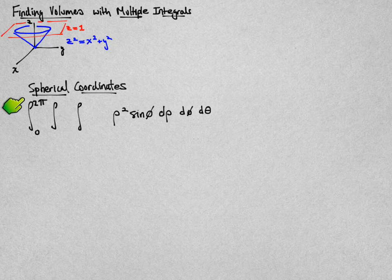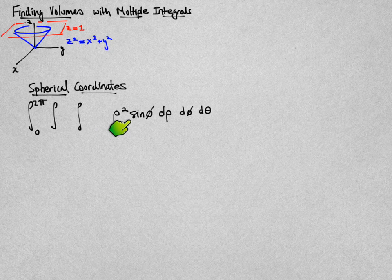We're going to do so in spherical coordinates, and by virtue of being in spherical coordinates, I automatically get a factor of rho squared sine of phi, and I've chosen an order of integration d rho, d phi, d theta.